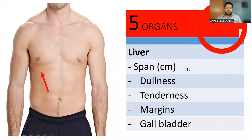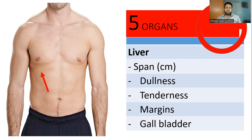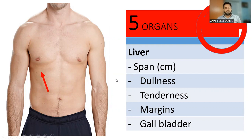The third step is organomegaly. The first organ to examine is the liver. Assess the liver span by palpating from the right iliac fossa upward, identifying a clear margin just under the costal margin. Then percuss from the clavicle downward until the note changes from resonant to dull, and measure the span in centimeters. Also assess for dullness, tenderness, margins, and any palpable gallbladder. A painless palpable gallbladder may indicate Courvoisier's sign.